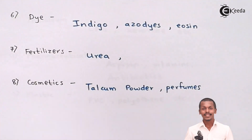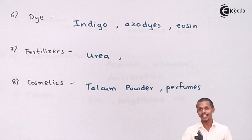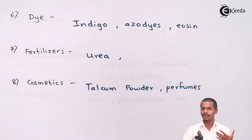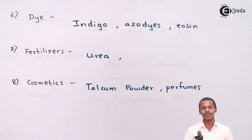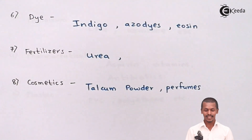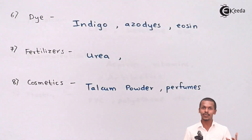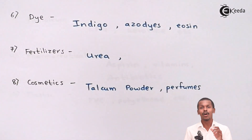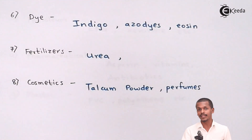Another day-to-day application is cosmetics — talcum powders and perfumes. Perfumes are basically compounds with a good aroma, which means they are of an aromatic nature. These compounds are basically hydrocarbons or organic compounds. All these applications demonstrate why it is necessary to understand organic chemistry and how we can prepare different chemicals from organic compounds.